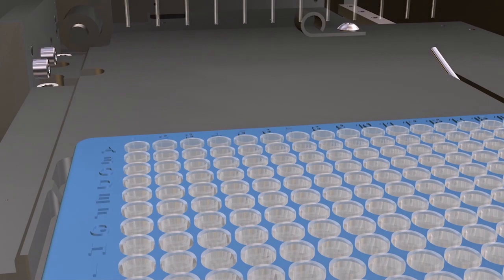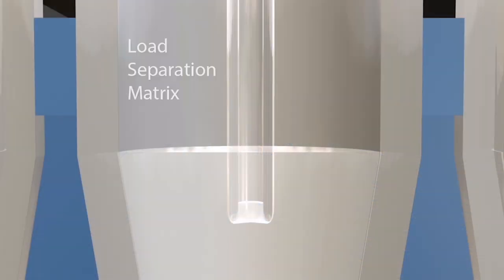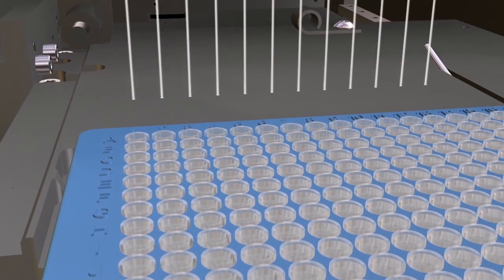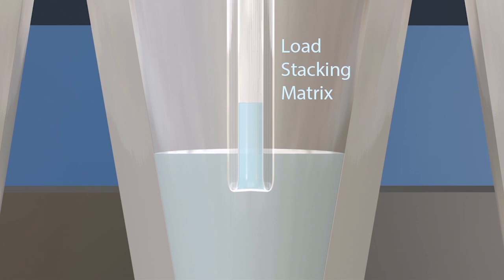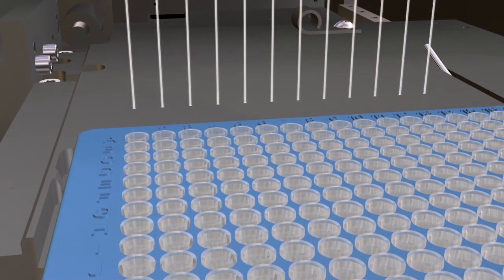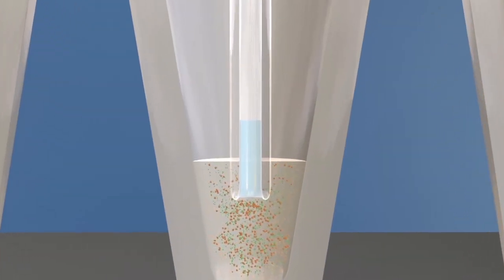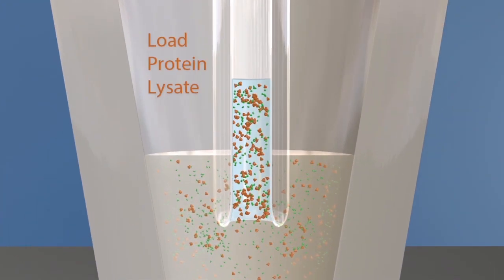antibodies, and reagents into each capillary from a 384 well plate. She begins by first loading the separation matrix, and then a stocking matrix into each capillary. Sally Sue then loads your protein lysate.